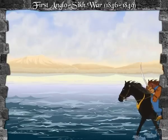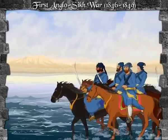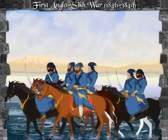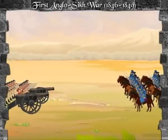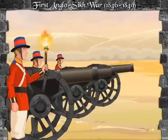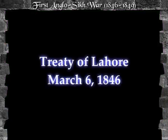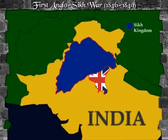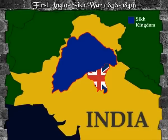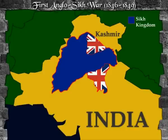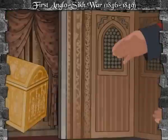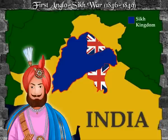The Sikh Khalsa, along with Lal Singh, crossed the boundary of Sutlej on December 11th, 1845. The British retaliated, leading to battles at Mudki, Ferozeshah, Aliwal, and Sobraon. The British made the Sikhs sign the Treaty of Lahore on March 6th, 1846. By this treaty, the Sikhs surrendered the Jalandhar Doab and had to pay a war indemnity of 15 million. Since the Sikhs could not raise this amount, they ceded Kashmir to the British. Kashmir was later purchased by Raja Gulab Singh of Jammu from the British for 75 lakhs, making Gulab Singh the ruler of Jammu and Kashmir.